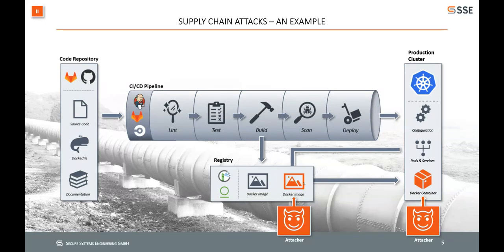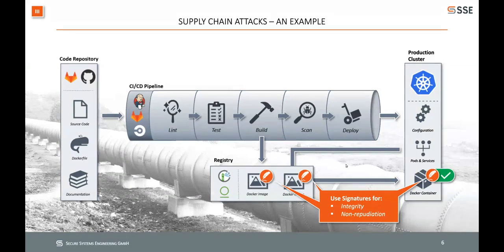To prevent these attacks, the usual solution is to use signatures — very similar to how apt uses them. When you get updates via apt, all the files are signed. So we're not doing anything new; we're just applying the standard solution. The goal is to keep the integrity of our source code throughout the whole pipeline, so that when it reaches the production system, we ideally only have code that actually came from the code repository.